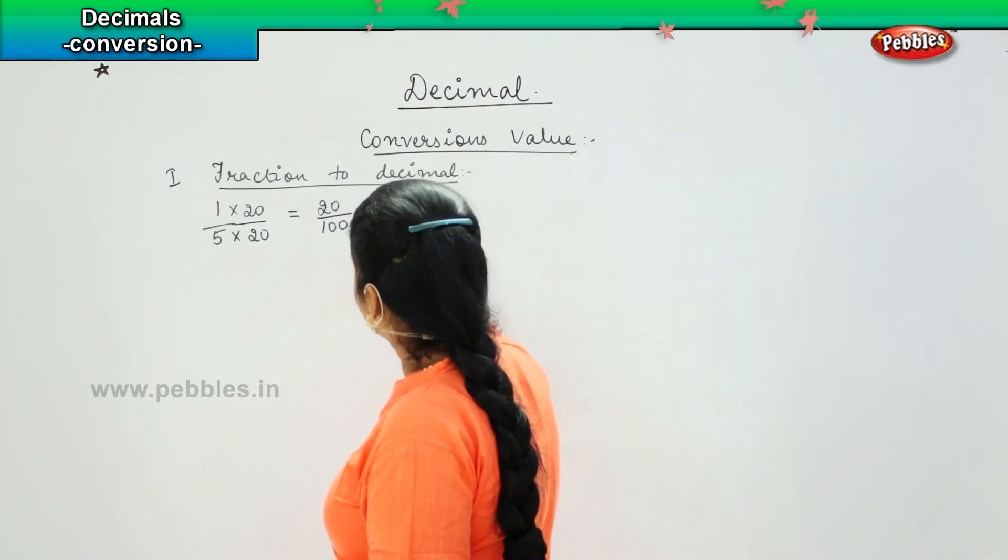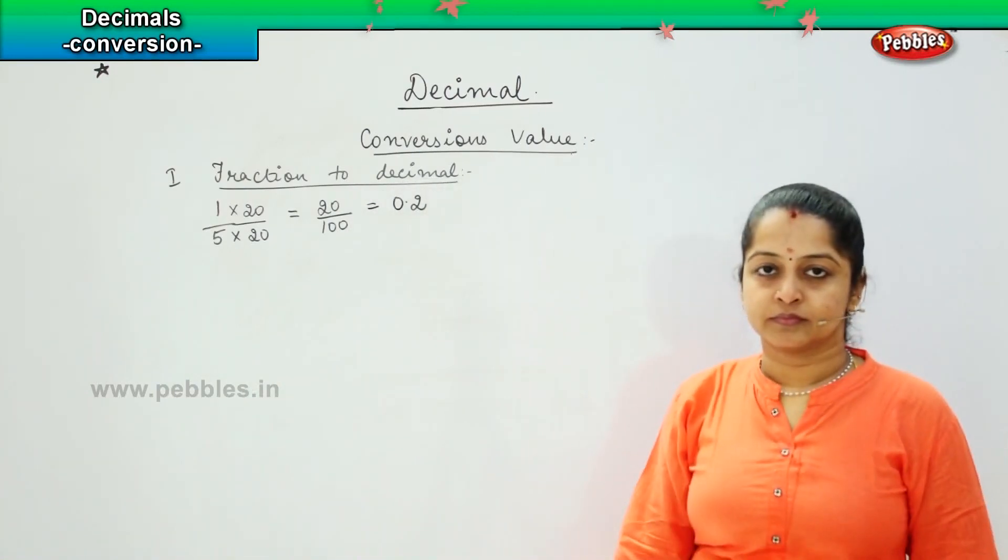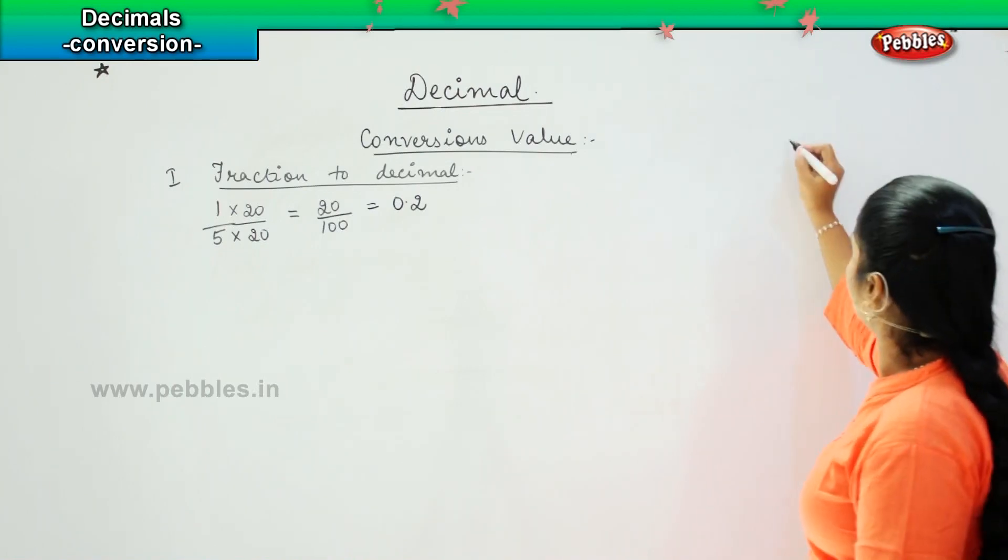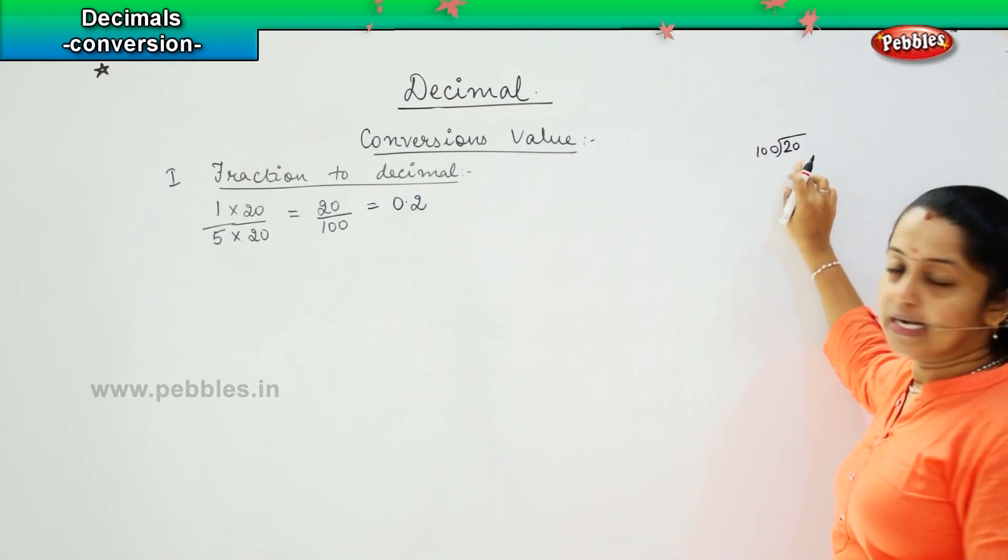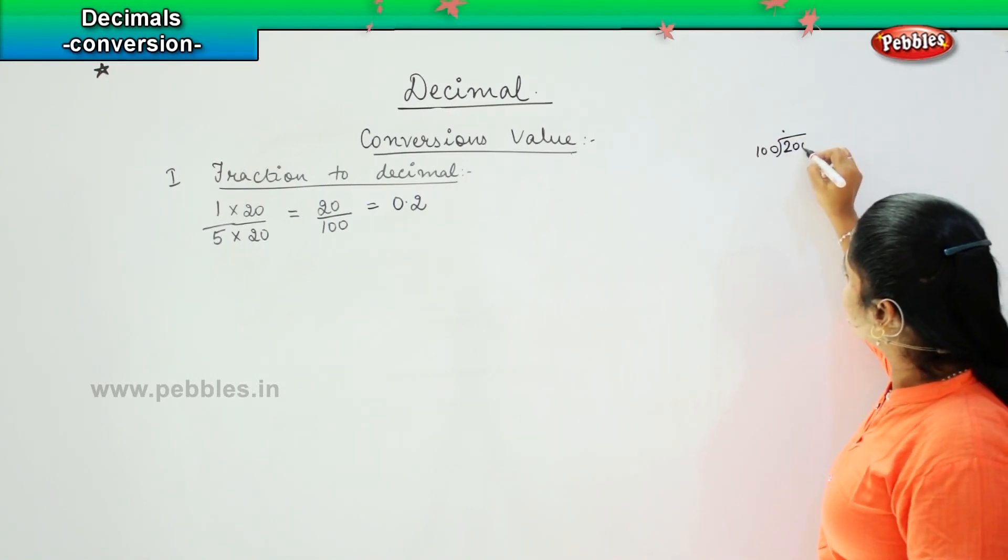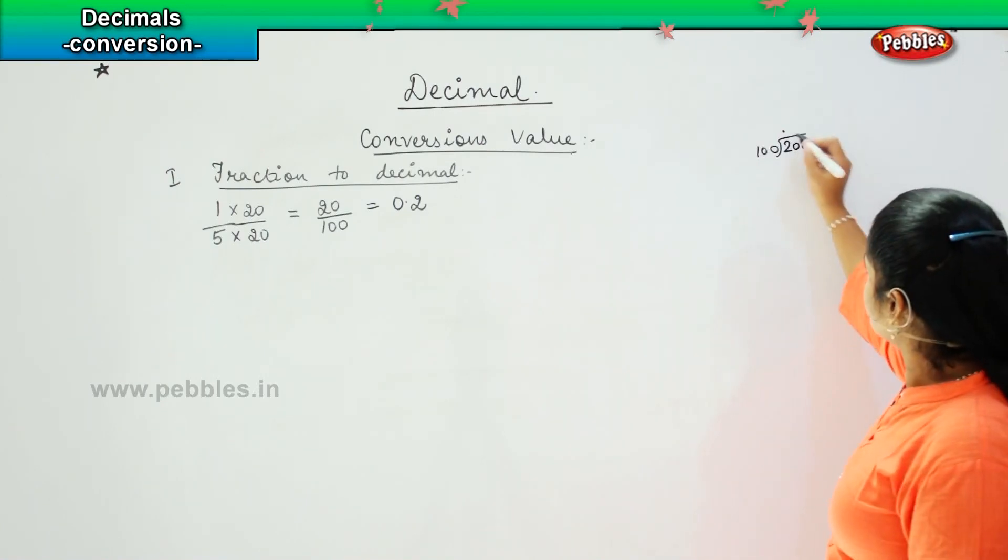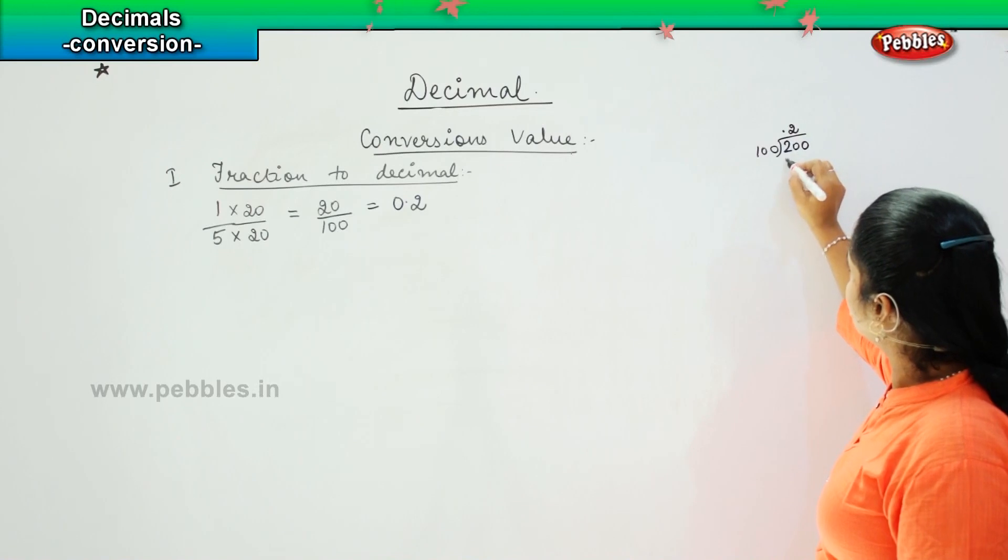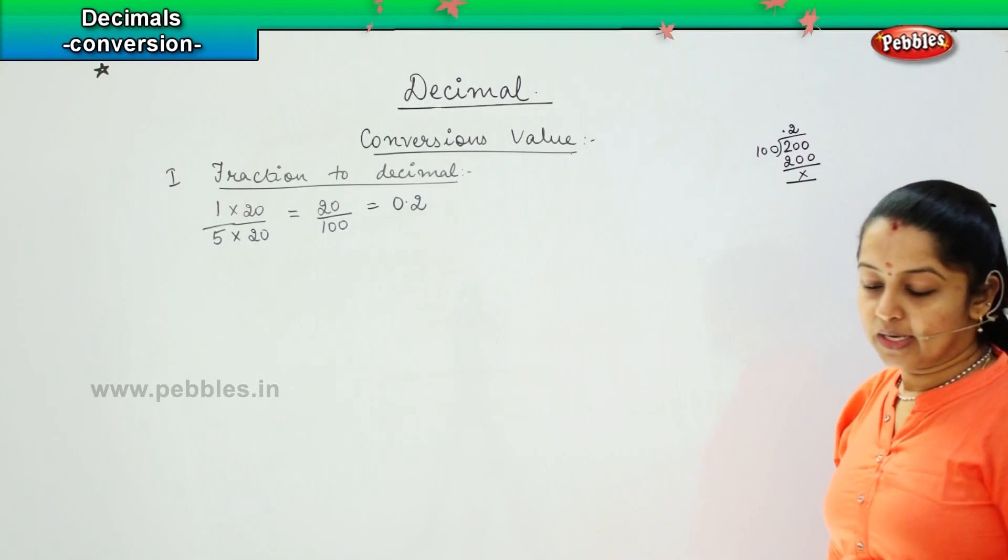So now this will become 0 point—shall we see? So 20 divided by 100, so will it get divisible? No. So I put a decimal here, this becomes here 0. Now, is it divisible? Yes. So I write here 2, 200 and my remainder is 0.